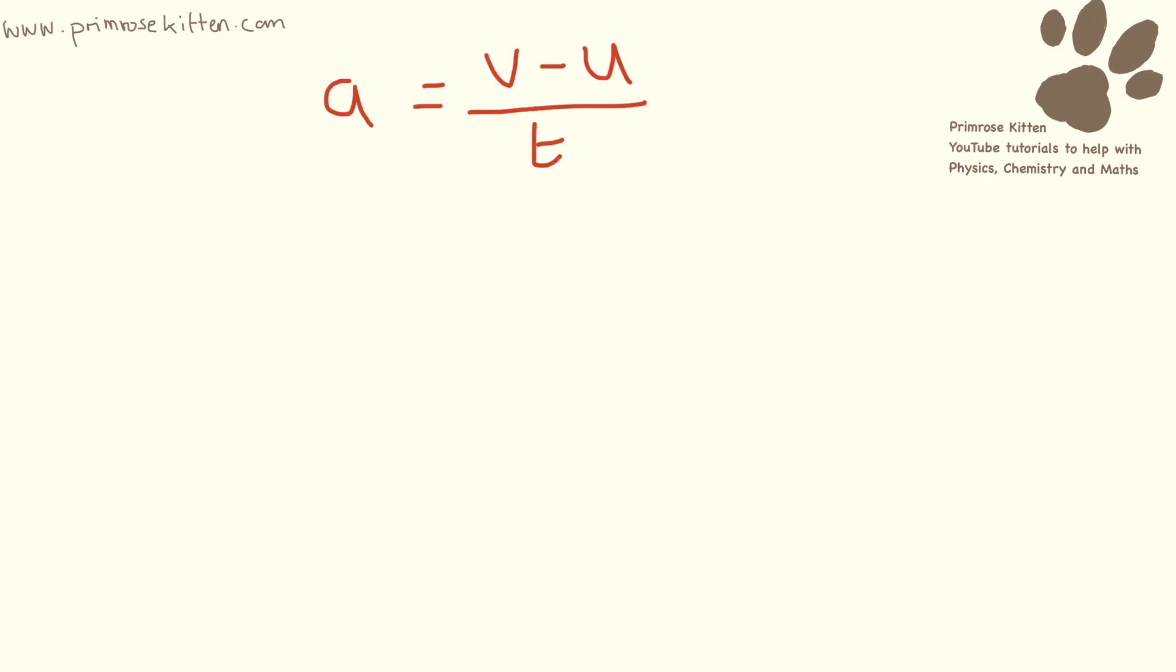Here we have acceleration equals final velocity minus initial velocity divided by time. I would like us to have U as the subject of the formula. Now U is currently divided by T. So the first thing we need to do is opposite that, times by T.